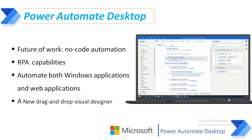Power Automate Desktop enables both coders and non-coders to easily automate processes and tasks across desktop and web applications. It introduces a new drag-and-drop visual designer with over 370 plus actions that run on your desktop, so you can automate everyday tasks to more complex business processes and workflows, all from one intelligent automation platform.